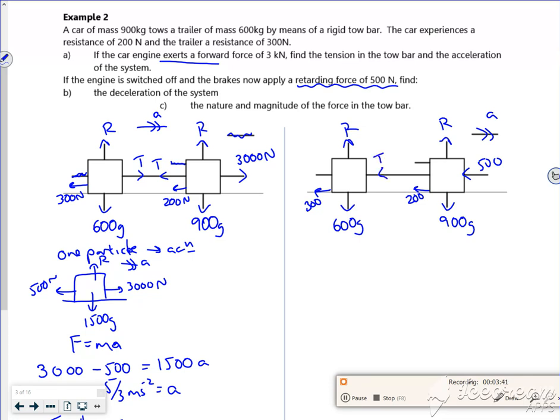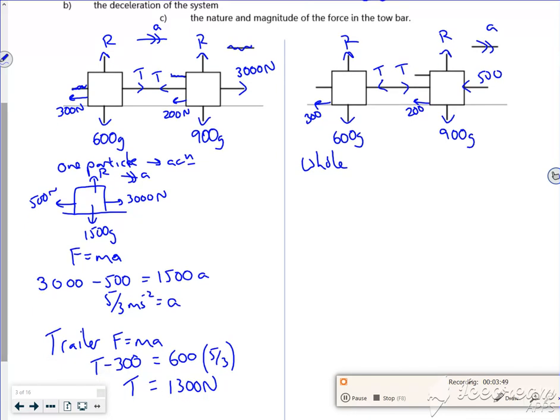But this time the forces are shunted, so these are now thrust forces going in the opposite direction. Right, so if I look at the whole system. So if I do F equals ma for the whole system, the force in the direction of travel is there is no force in the direction of travel. All I've got is the minus a thousand in total.